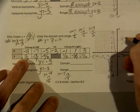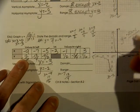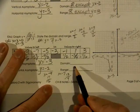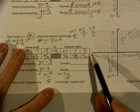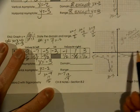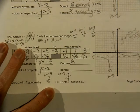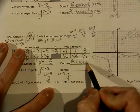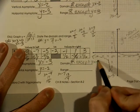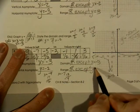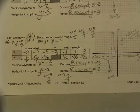Our equation is negative two x minus one over x plus three. For the domain, we can use any x value — all real numbers — except the asymptote, x equals negative three. For the range, you can get any answer except y equals negative two.